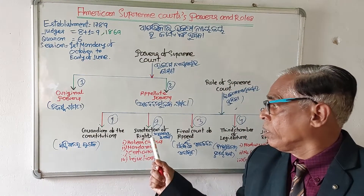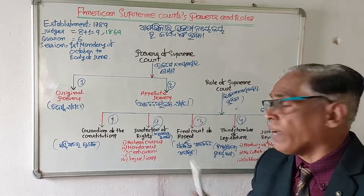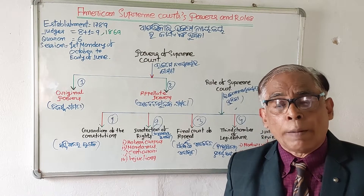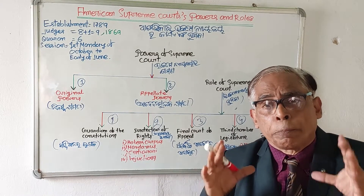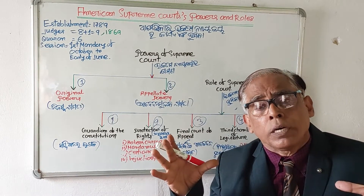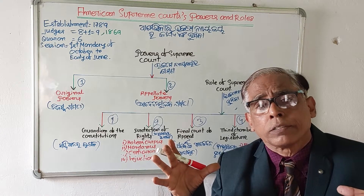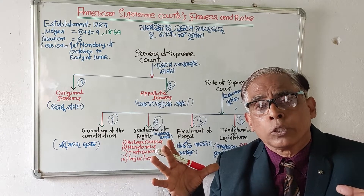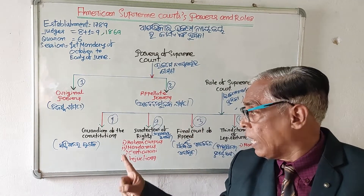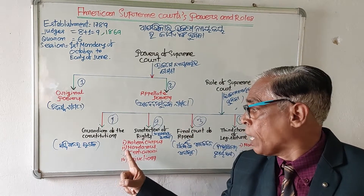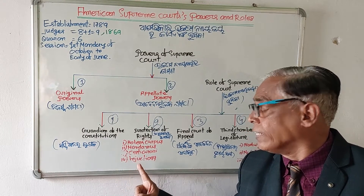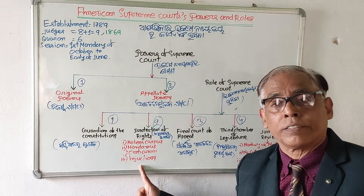The second role is Protector of Rights. The American Supreme Court protects the rights of American citizens by issuing writs such as habeas corpus, mandamus, certiorari, and injunctions.